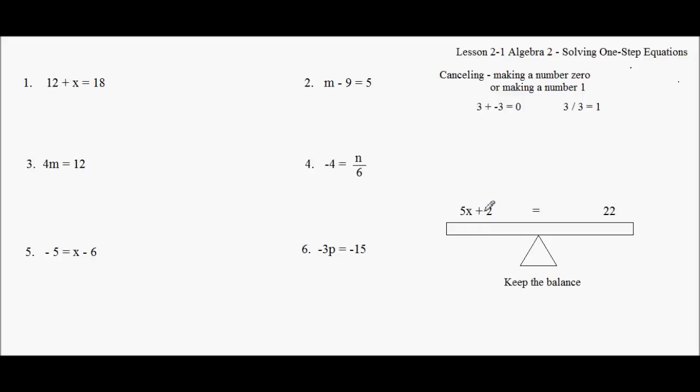So I am going to go after the add first. You kind of go after the farthest away number first. The 2 is farther away from the 5. And it's added. So you want to get rid of the adding and subtracting first. So I'm going to minus 2 both sides. Minus 2 from both sides, I get 5x equals 20.